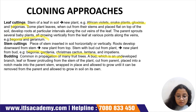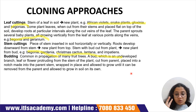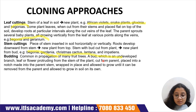Moving forward, we can also go with budding. Budding is a kind of vegetative propagation or asexual reproduction seen in yeasts, where one yeast organism divides itself into two halves, each of which gives rise to individual yeast cells. It is also common in propagation of many fruit-bearing trees like mango and apple. A bud — an undeveloped branch, leaf, or flower protruding from the stem — is cut from the parent, placed into a notch made in a parent stem, wrapped in place, and allowed to grow until it can be removed and grown in soil on its own.